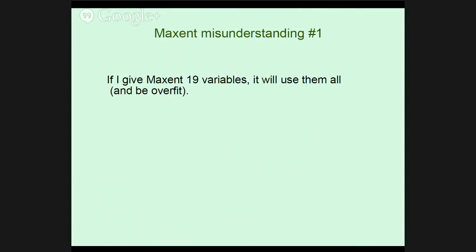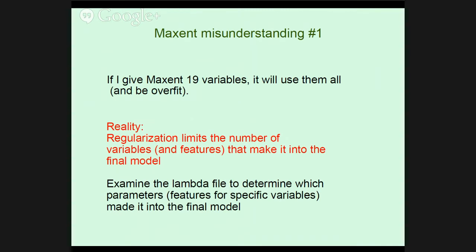I have two major MaxEnt misunderstandings I want to address. The first is: 'If I give MaxEnt 19 variables, it will use them all and will be overfit.' That may be true, but it's not necessarily true. In reality, regularization limits the number of variables and features that make it into the final model — the stronger the regularization, the fewer the variables and features in the final model. To determine that, you really need to look at the lambda file to see which particular parameters make it into the final model.